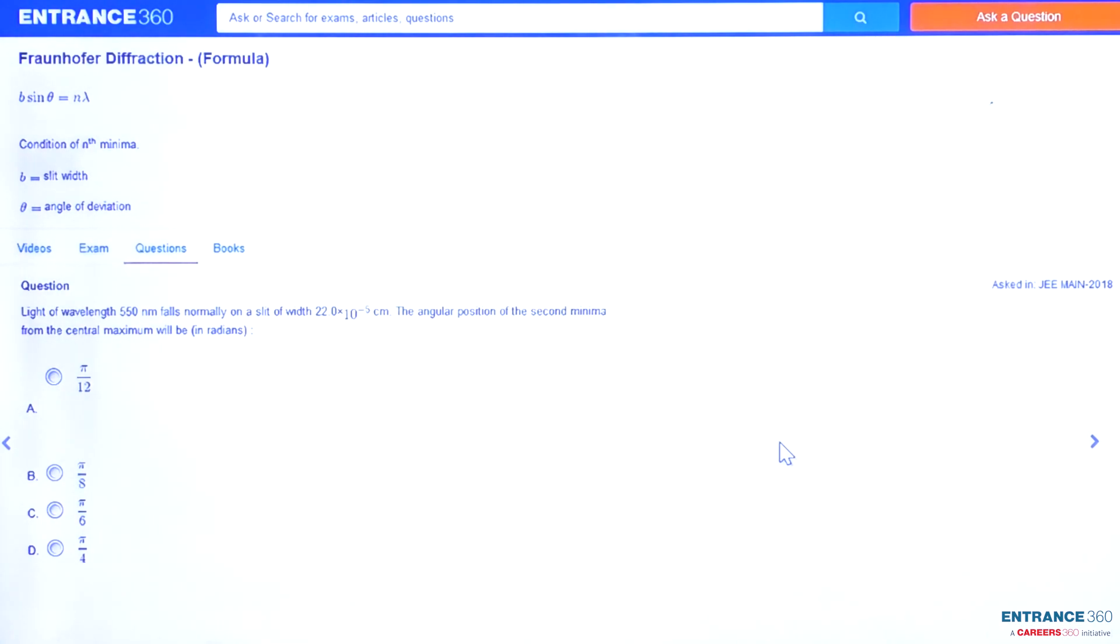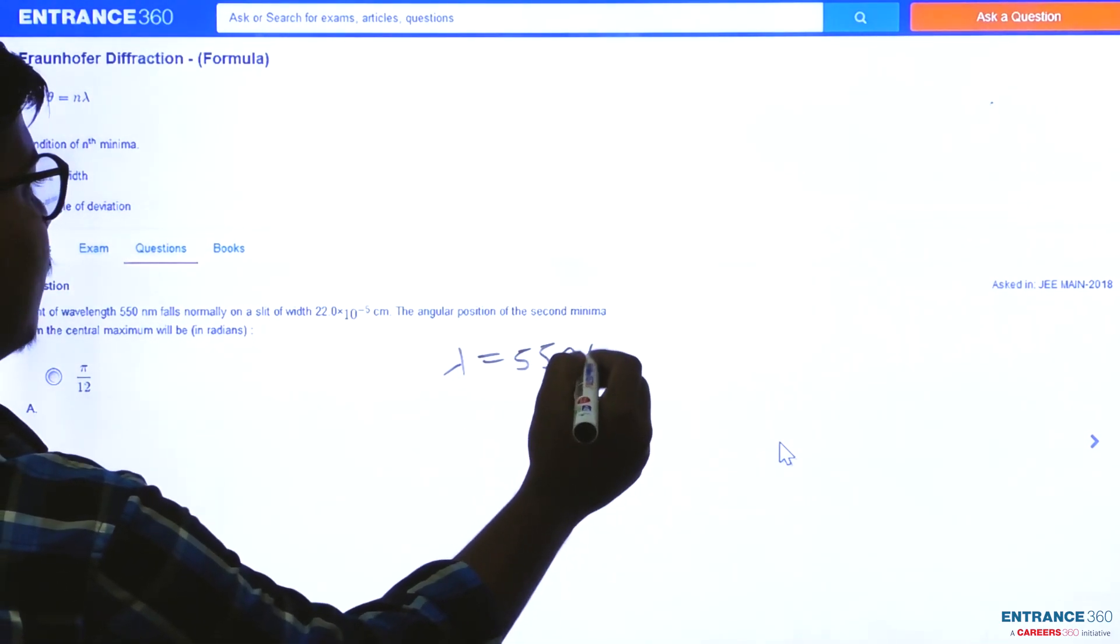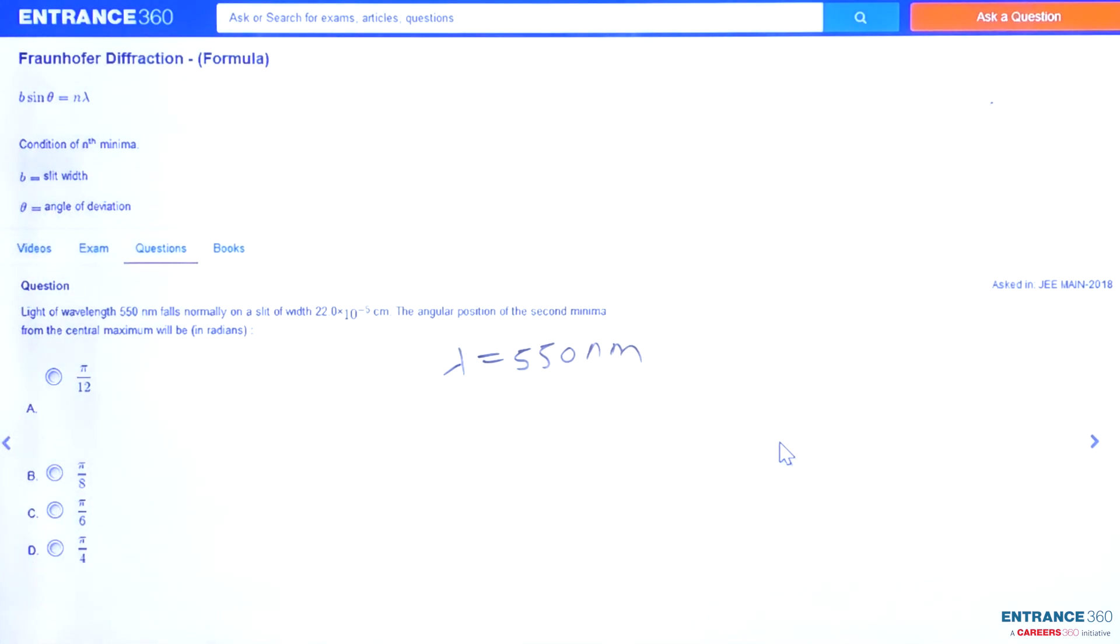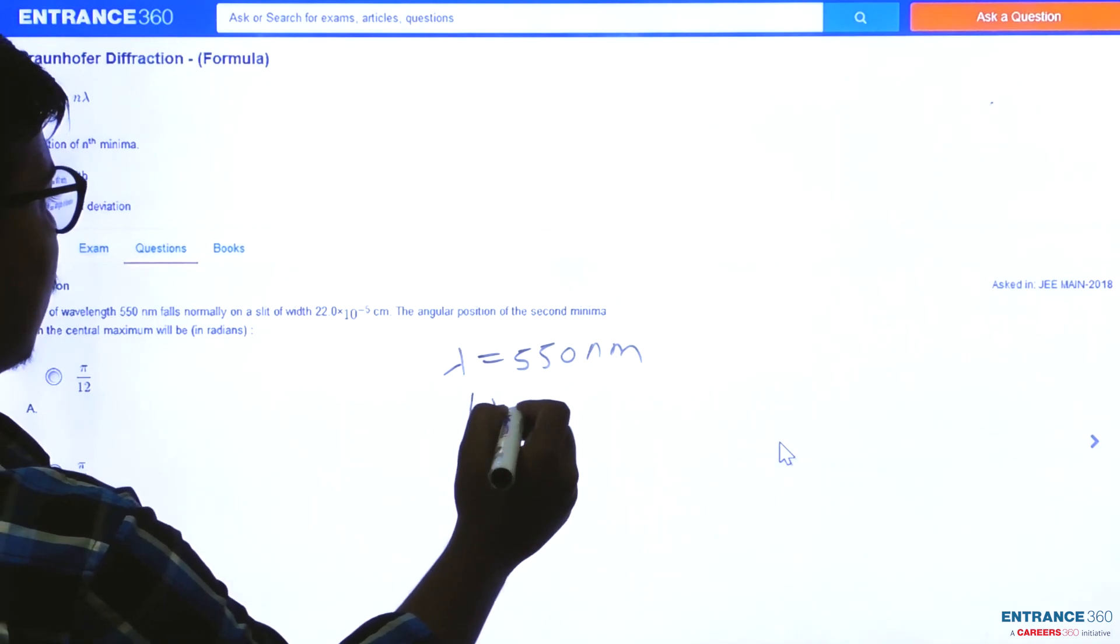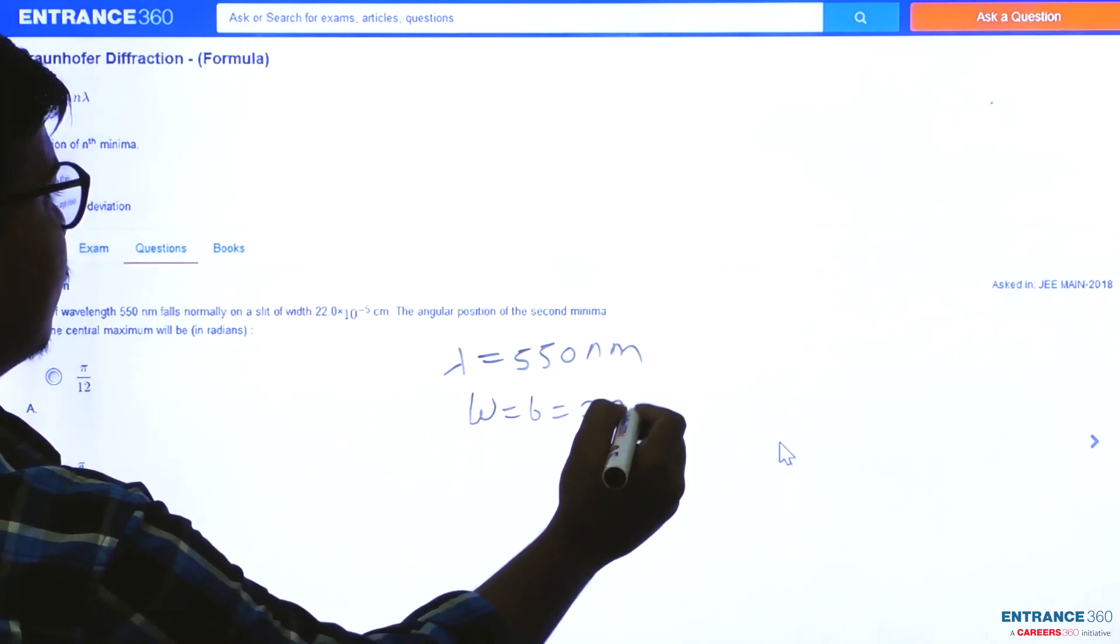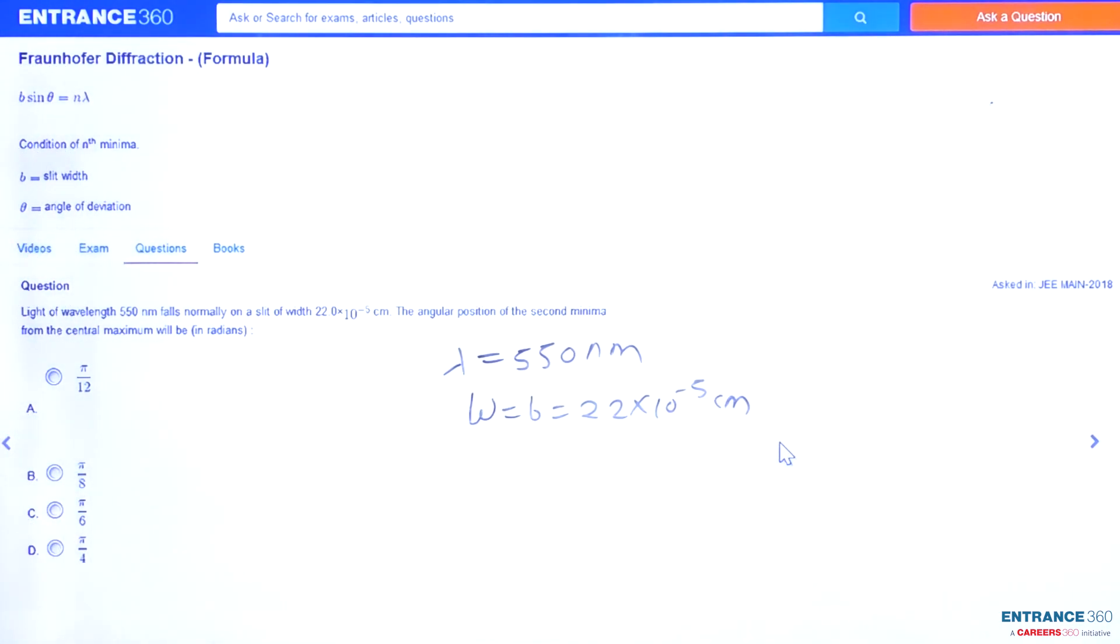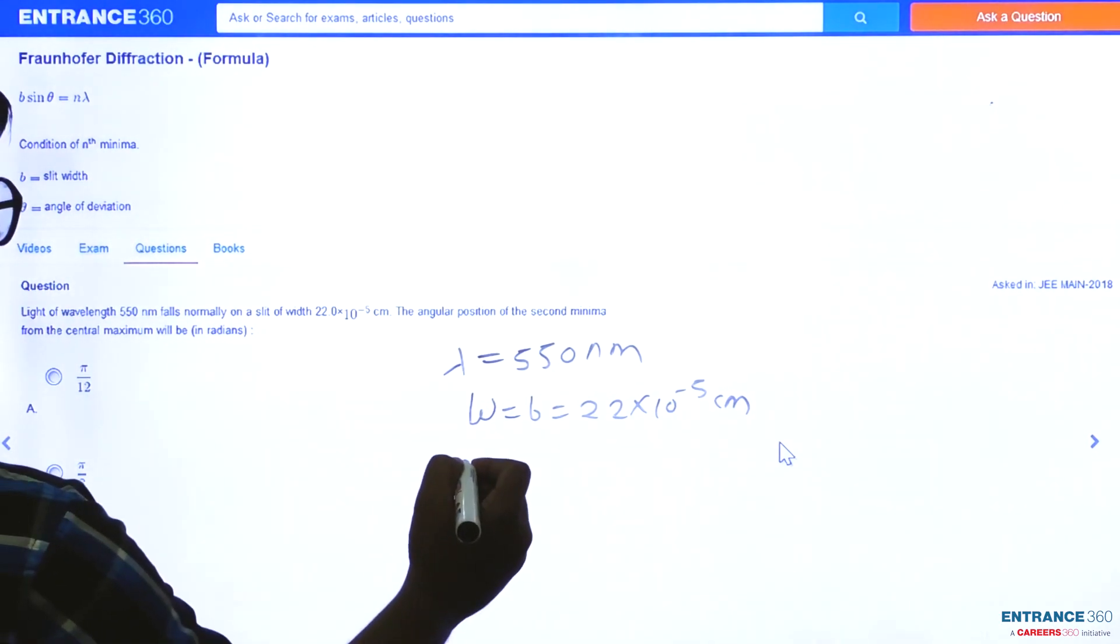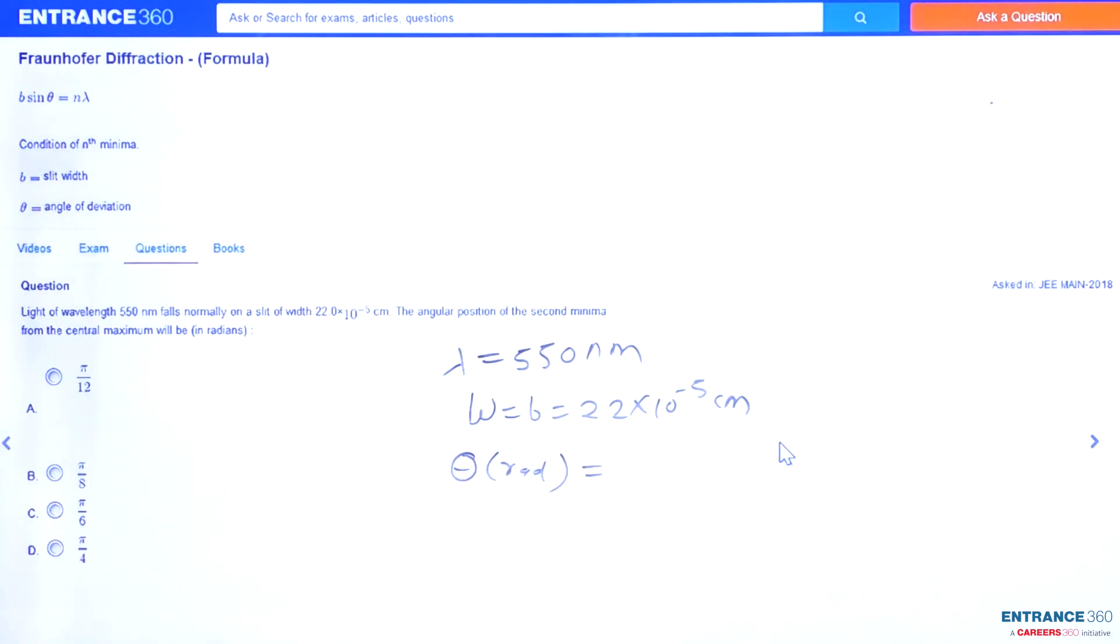The question says we have light of wavelength lambda equal to 550 nanometers that falls normally on a slit with width W equal to 22 into 10 to the power minus 5 centimeters. We want to find the angular position of the second minima from the central maxima, the value of theta in radians.